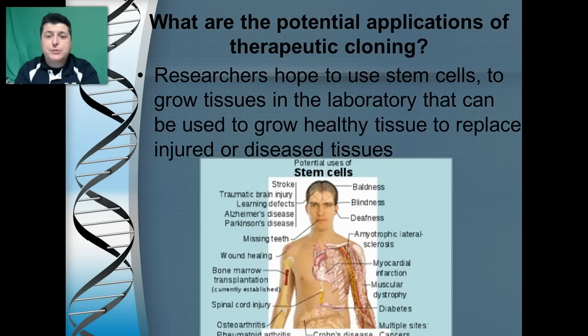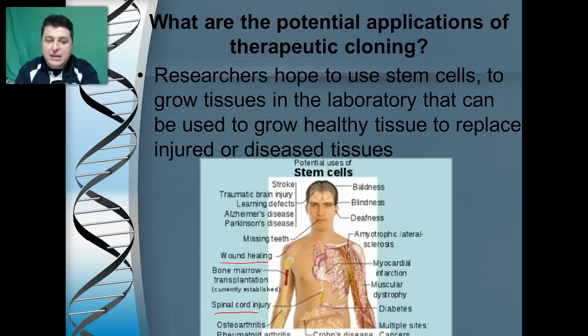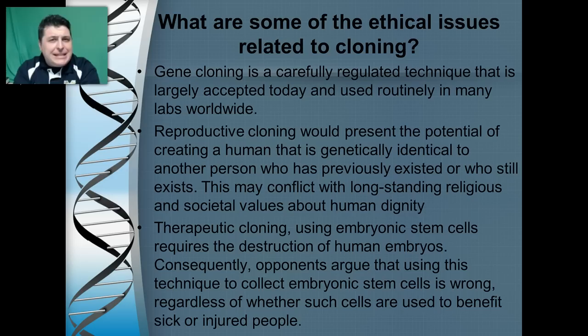Ideally, researchers hope to use stem cells to grow tissues to replace injured or diseased tissues, helping with conditions like spinal cord injury, wound healing, Parkinson's disease, Alzheimer's disease, muscular dystrophy, diabetes, and heart attack. There's a lot of potential for stem cells as long as we can find ones that are less controversial to utilize.